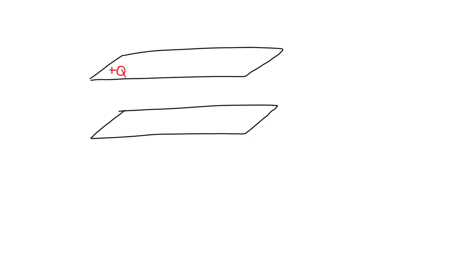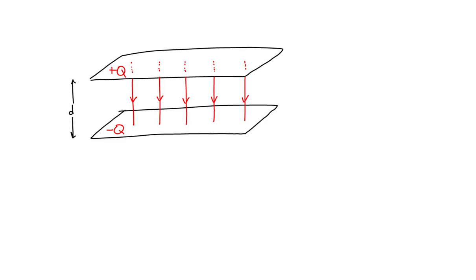To show this, we're going to take a parallel plate capacitor. We have a parallel plate capacitor with a positive charge Q on the upper surface and negative Q on the lower surface. Because this capacitor maintains a charge separation, there is an electric field between the plates. This electric field is uniform if the separation distance between the two plates is small in comparison to the size of the capacitors.